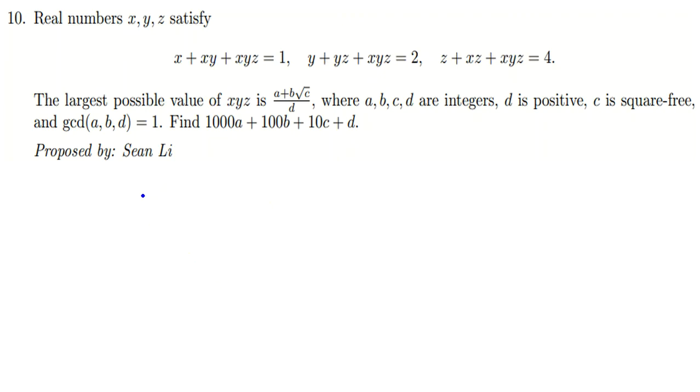If we add up all these terms, then we have x + y + z + xy + yz + xyz + 3xyz = 1 + 2 + 4, which is 7.